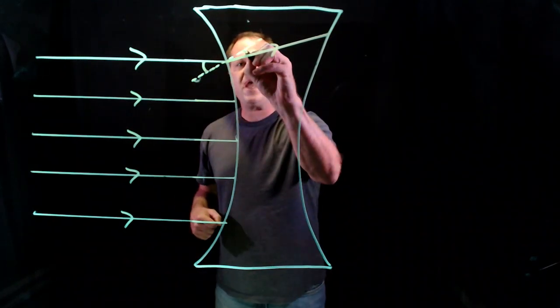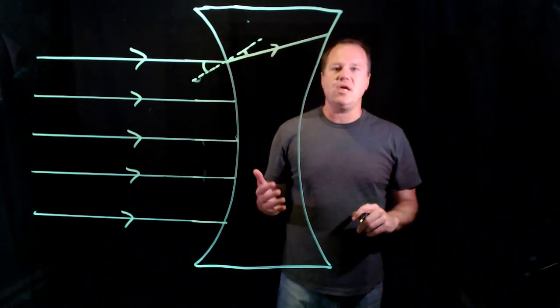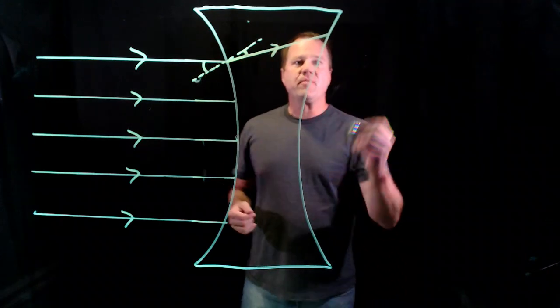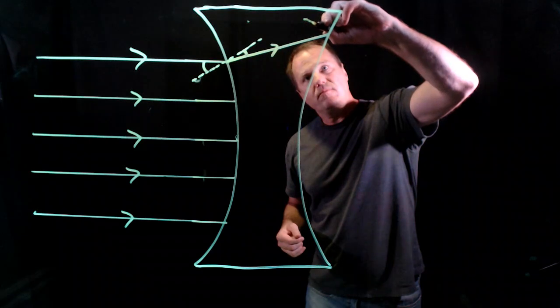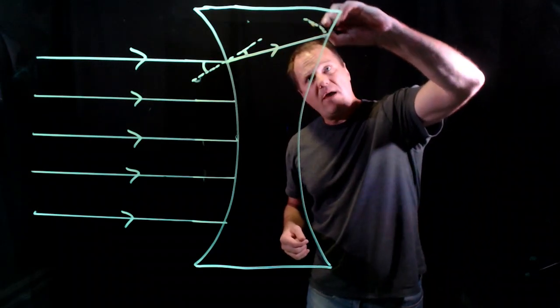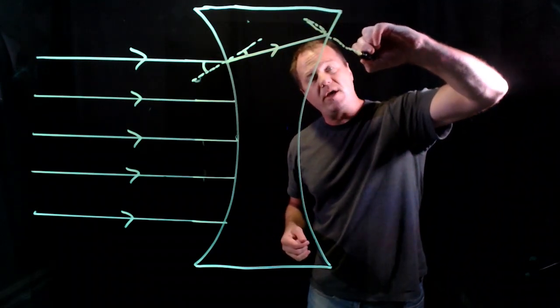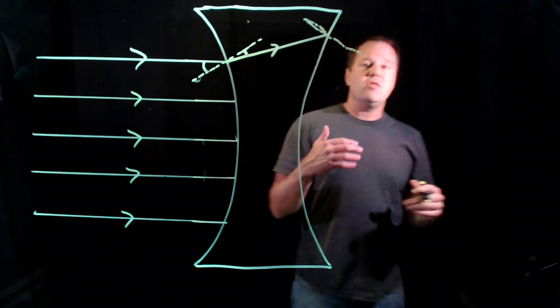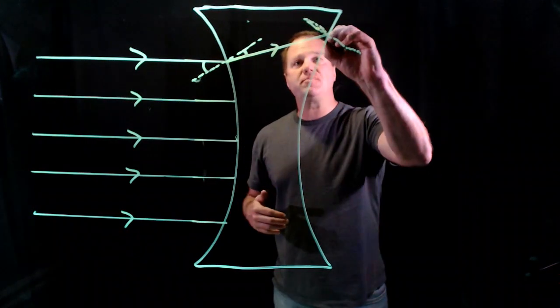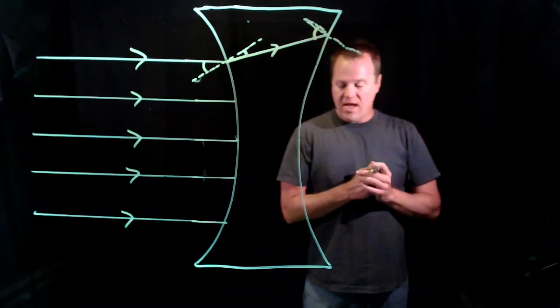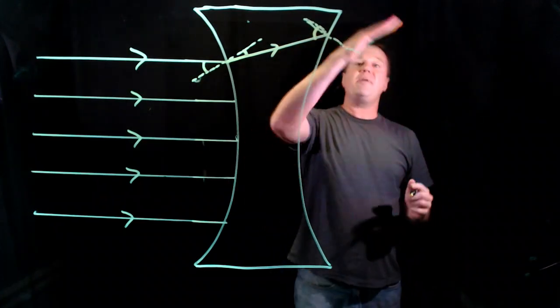Then I draw another perpendicular to this surface here. At that point, as it's exiting, the index of refraction is going down, so the angle with respect to that dotted line has to go up. So it bends up again.